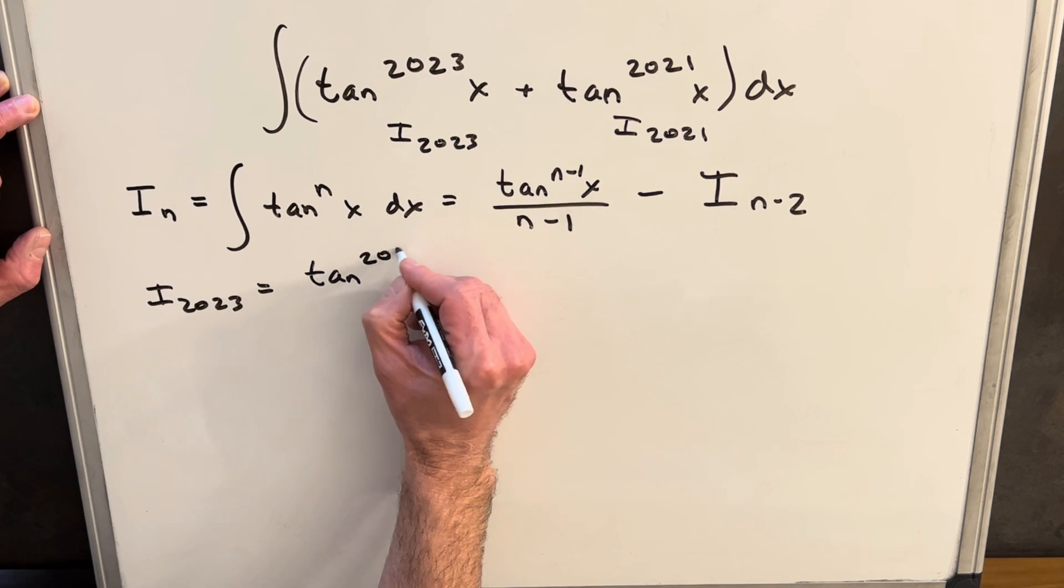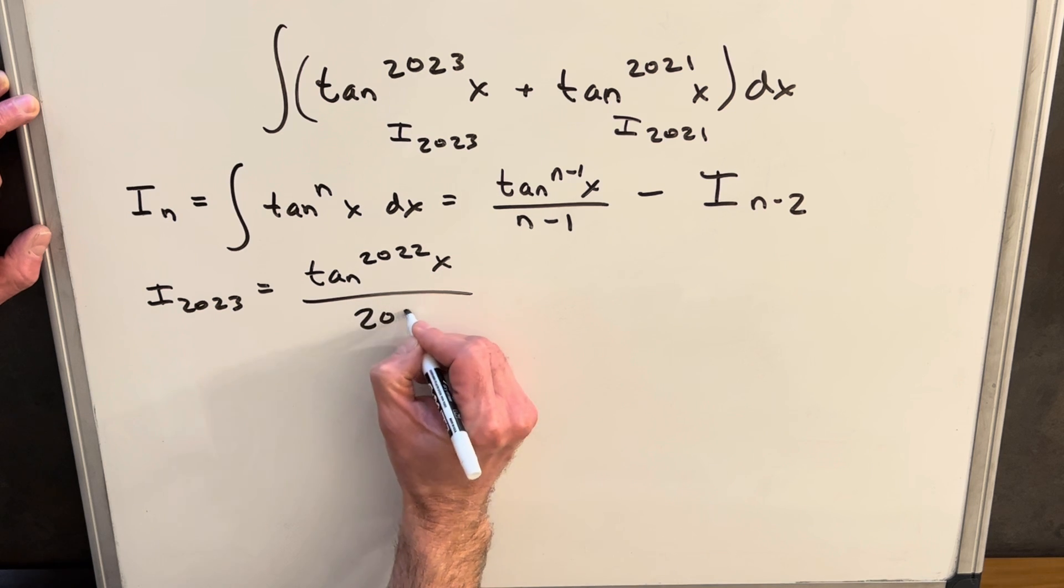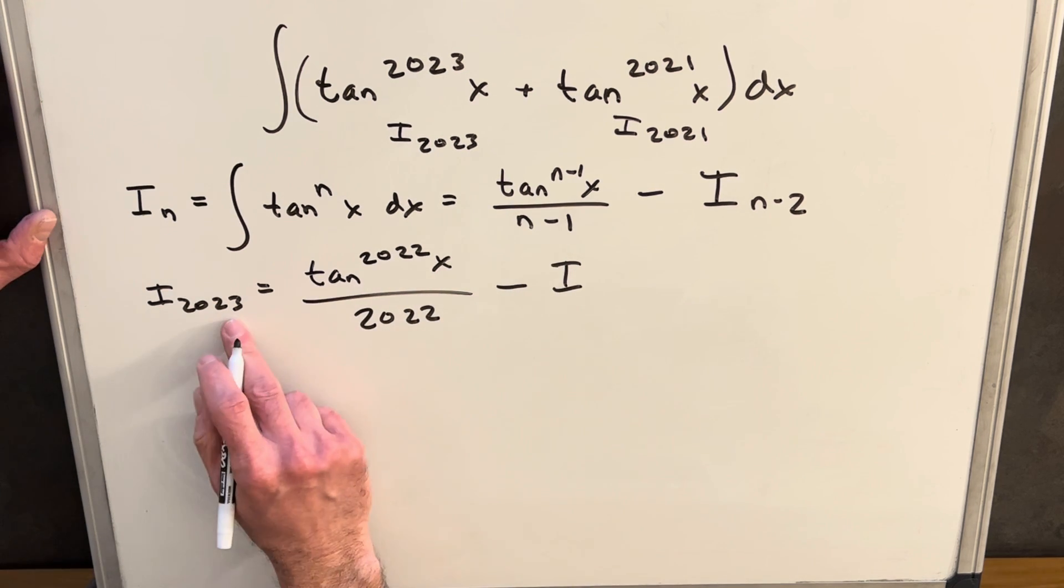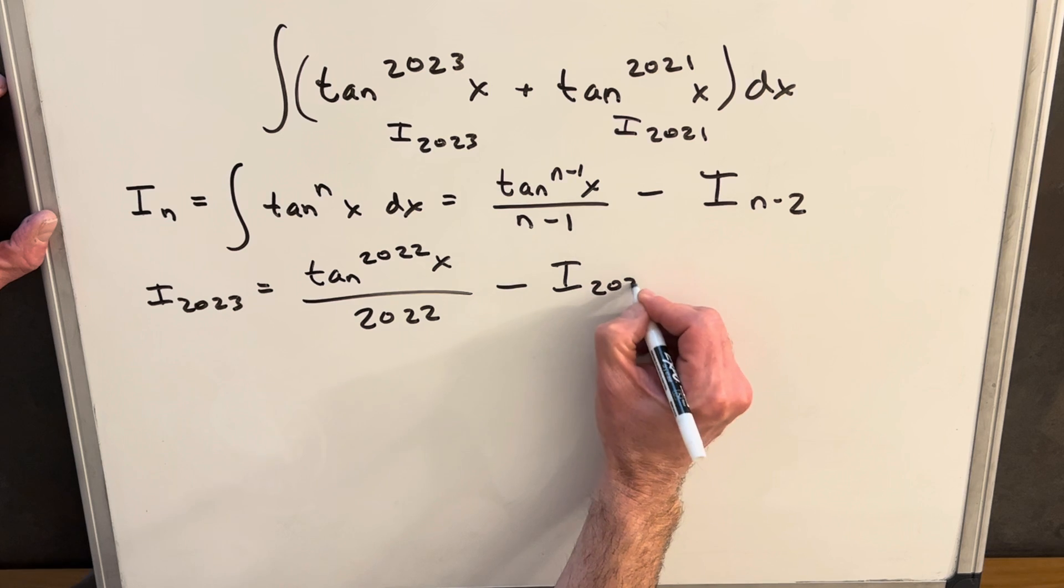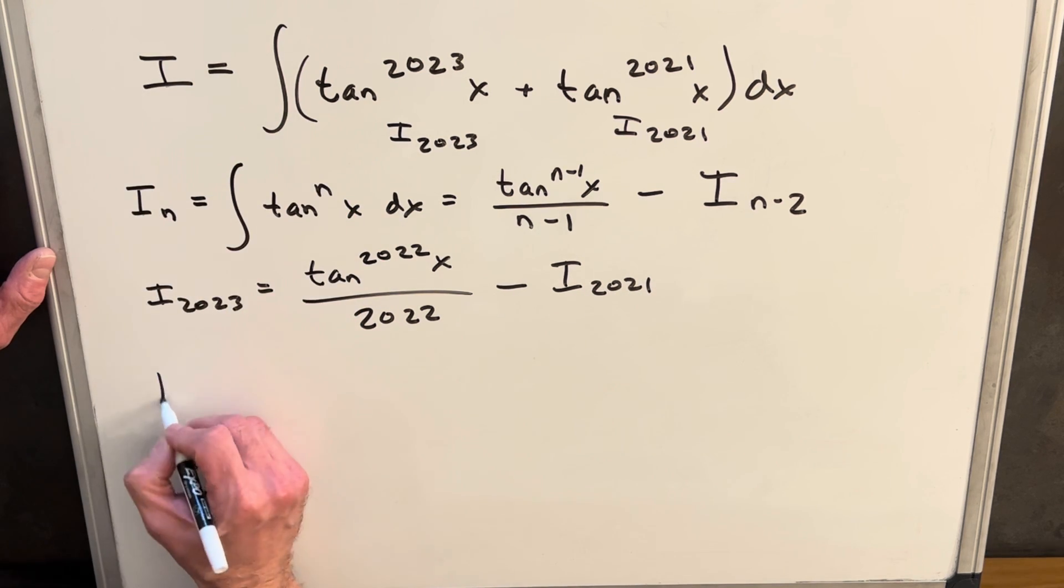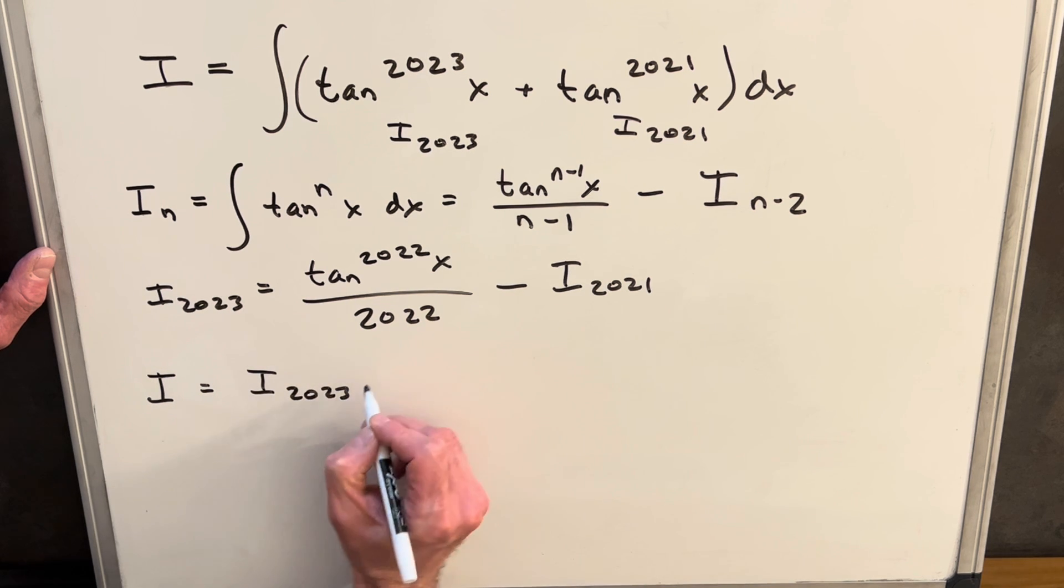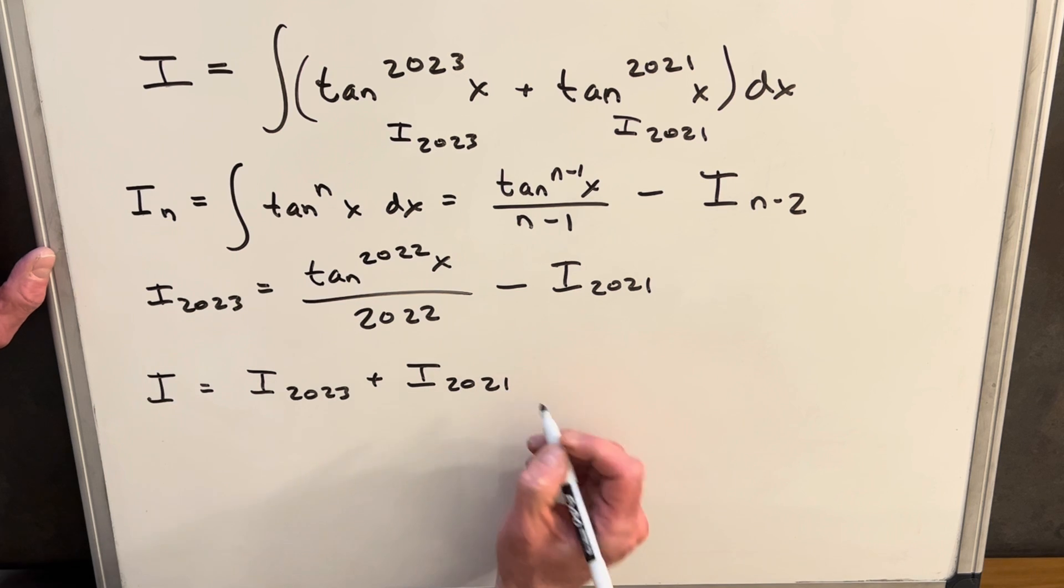So we're going to have tan n minus 1, so that's going to be 2022x over n minus 1. Again, it's just 2022 minus i sub n minus 2, which is going to be 2021. I'm just going to call this i. So this whole thing, i, is going to be i sub 2023 plus i sub 2021.